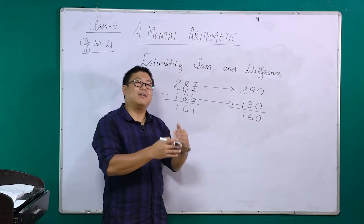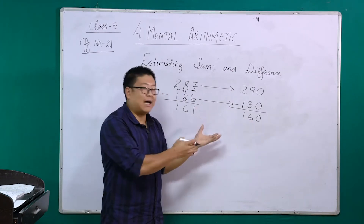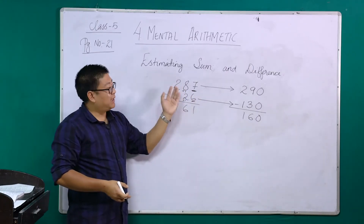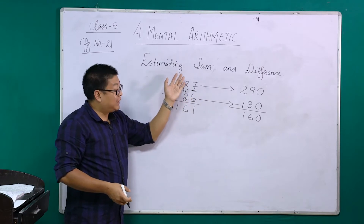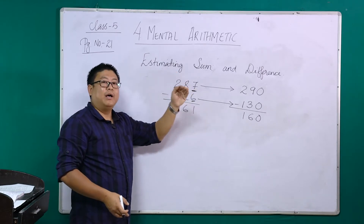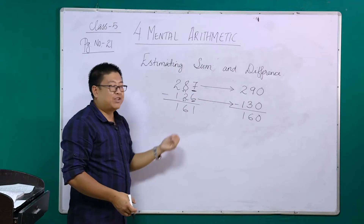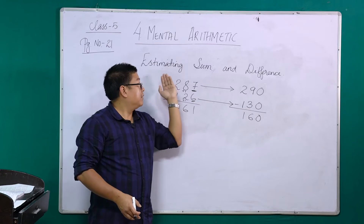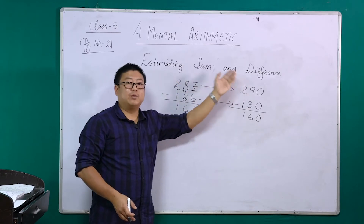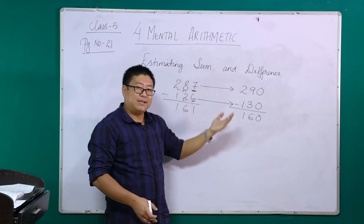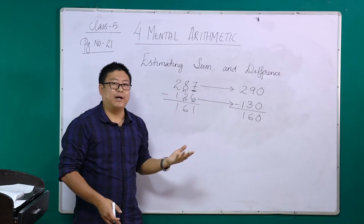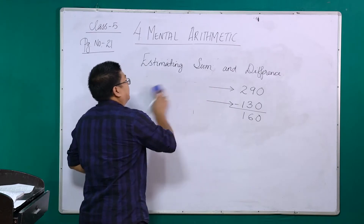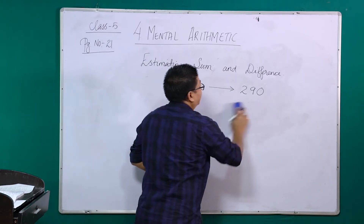Estimation means rounding off to the nearest possible value — getting a rough idea about the sum, the product, the length, the weight. So far we have done examples citing only the nearest 10. In the exercises, we will be dealing with estimation of sums and differences to the nearest 10, then hundreds, then thousands. So without further delay, let's move on to the exercises.